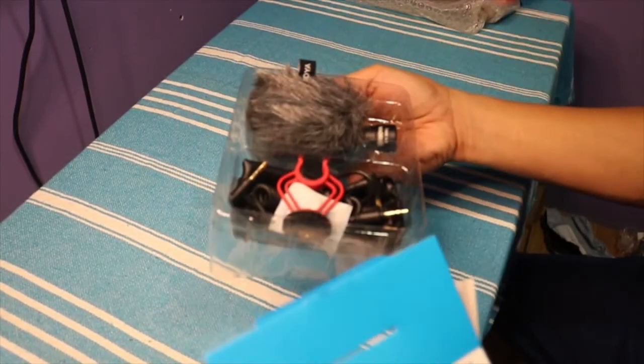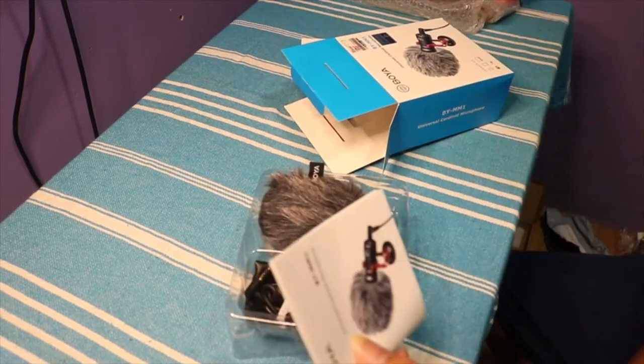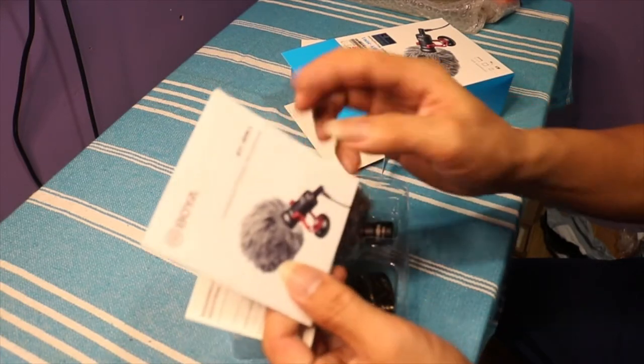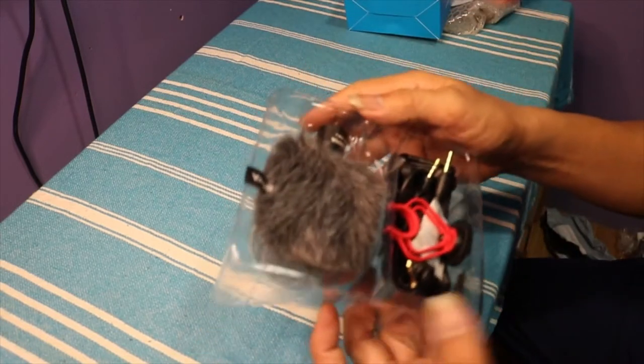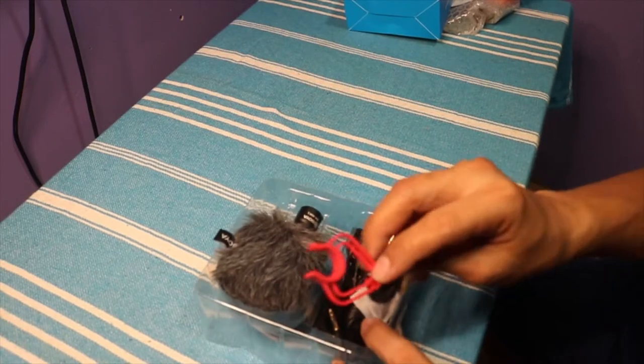Tadaaan! So what do we have? Of course, there's a warranty card and then a manual as usual. And then this is the product inside. As you can see, there's the shock mount.